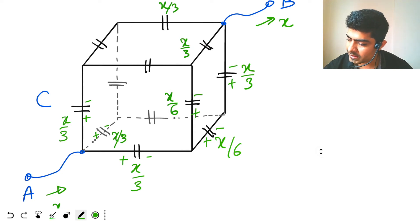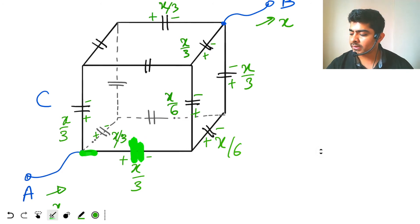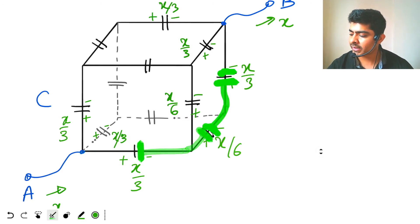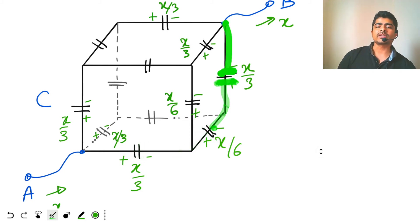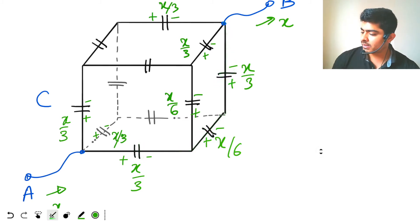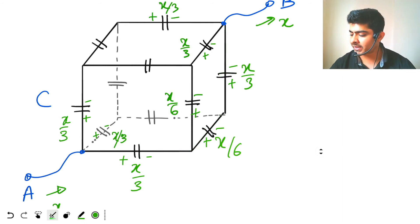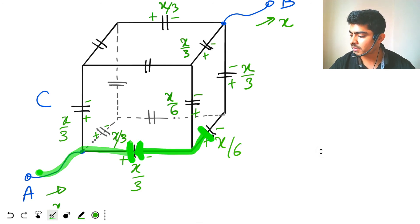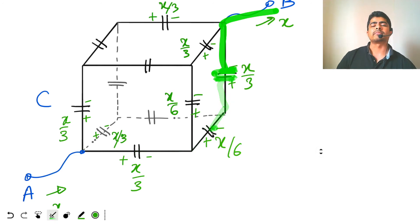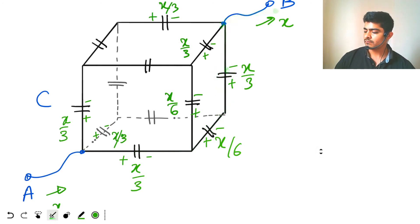The polarities are selected so that the first plate is positive and the second plate is negative throughout. Going from A: first plate positive, second plate negative; first plate positive, second plate negative; first plate positive, second plate negative — and finally exiting at B.